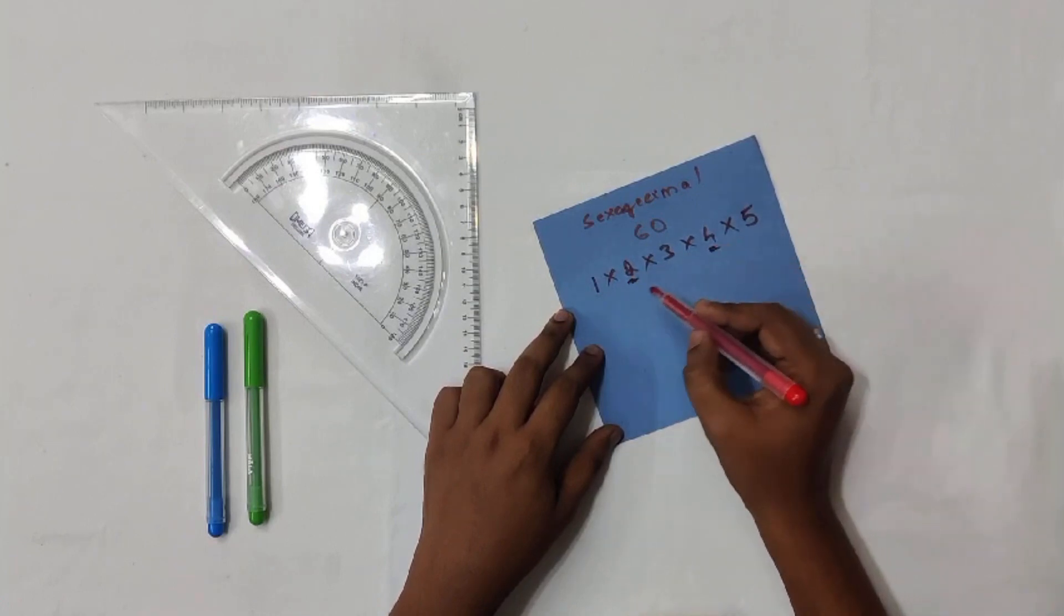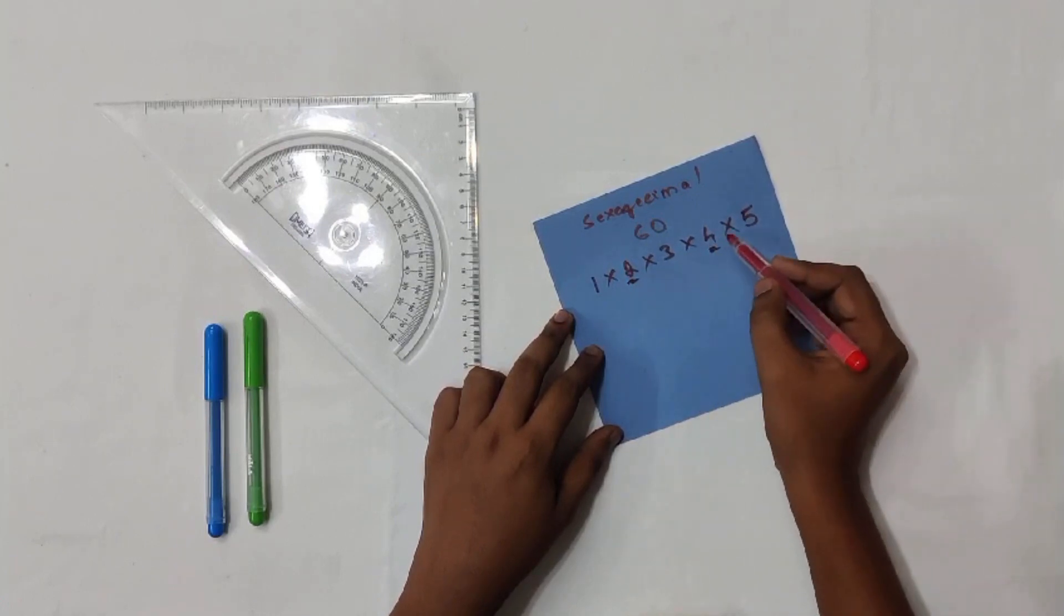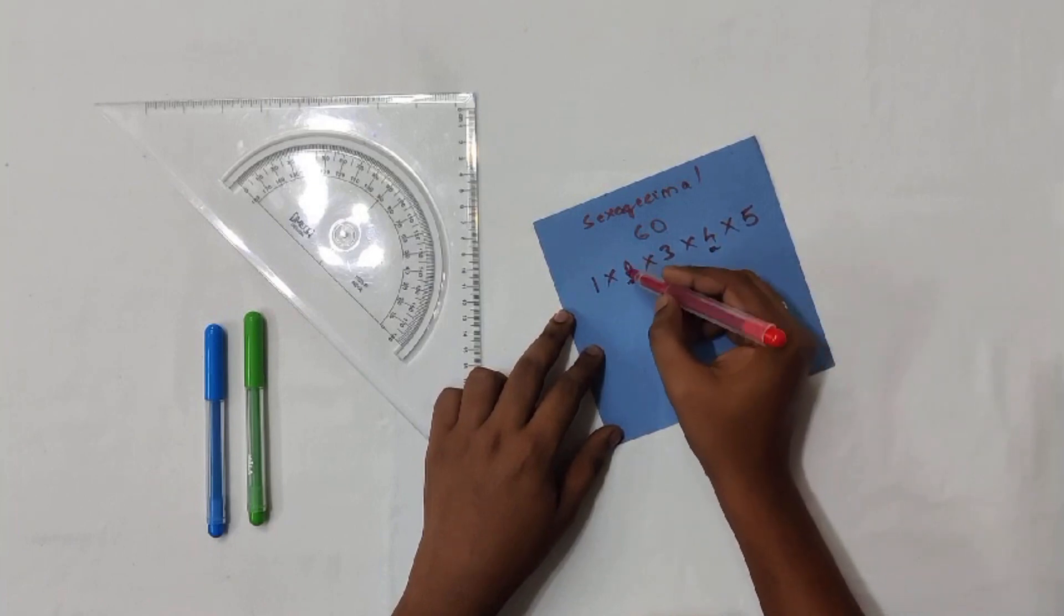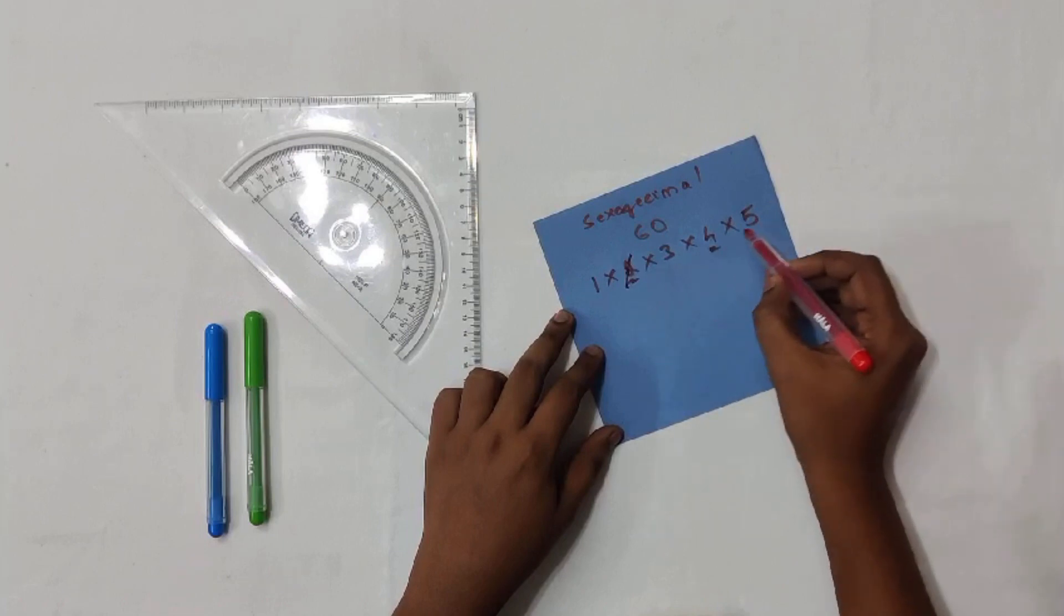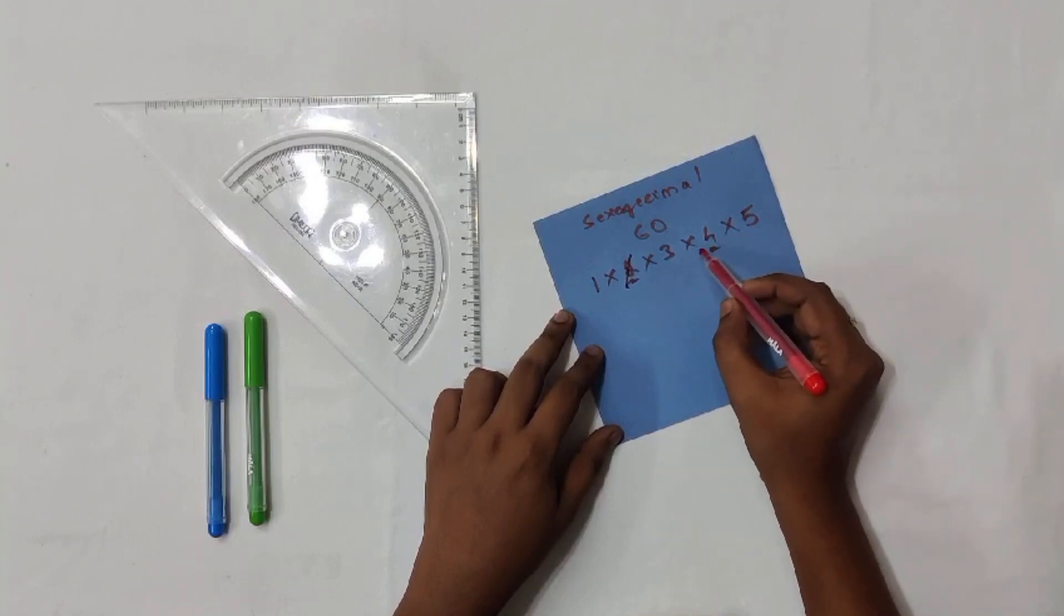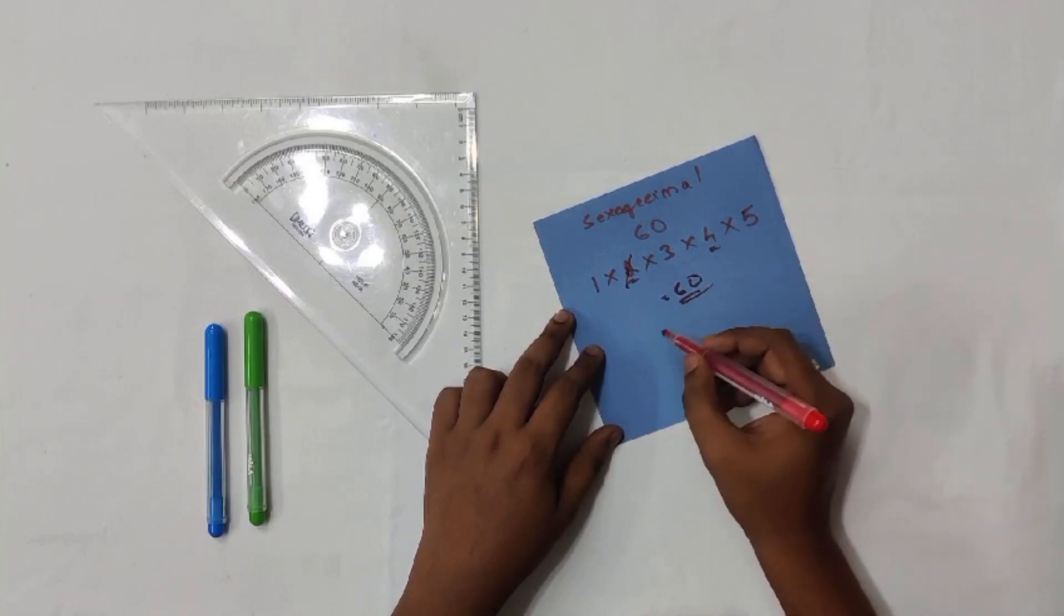If something is divisible by 4, it is also divisible by 2, so you can cross out 2. So 1 × 3 × 4 × 5 is going to be the base that we need. 3 × 4 is 12, 12 × 5 is going to be 60. This is the reason that we have the base 60.